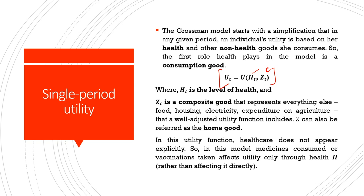Here, h_t is the level of health and z_t is a composite good representing everything else the consumer consumes — food, housing, electricity, expenditure on agriculture, and all kinds of goods that improve utility in the period considered. z_t is referred to as the home good. In this utility function, healthcare does not appear explicitly. Medicines consumed or vaccinations taken affect utility only through health h, rather than affecting it directly.